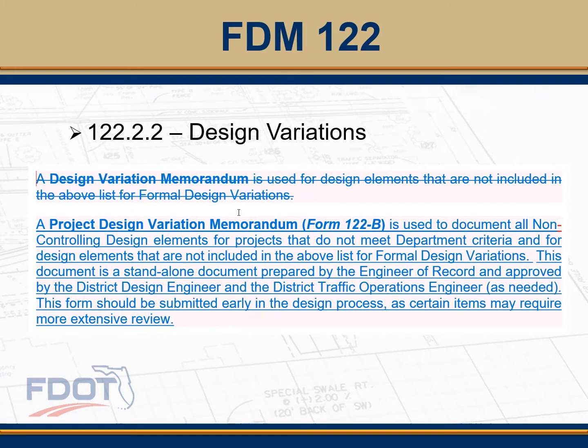Also from the bulletin, section 122.2.2: the project design variation memorandum is used to document all non-controlling design elements for projects that do not meet design department criteria and are not included in the previous list for formal design variations. The idea of this standalone document is that it's supposed to capture all the variations on a project. You want to go through the project early in the design process and record those things that you feel shouldn't be part of the final design but don't necessarily meet department criteria.